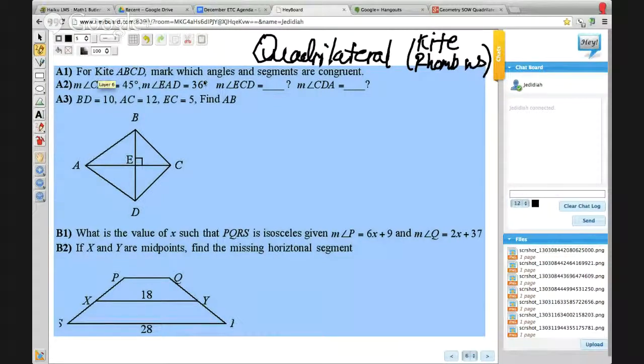Okay, so for kite ABCD, mark which angles and segments are congruent. So let's go mark them. This has like this mirror image quality from top to bottom, so I could say this one is congruent to this one and this one is congruent to this one and then this one is congruent to this one, and we got congruency all over the place.